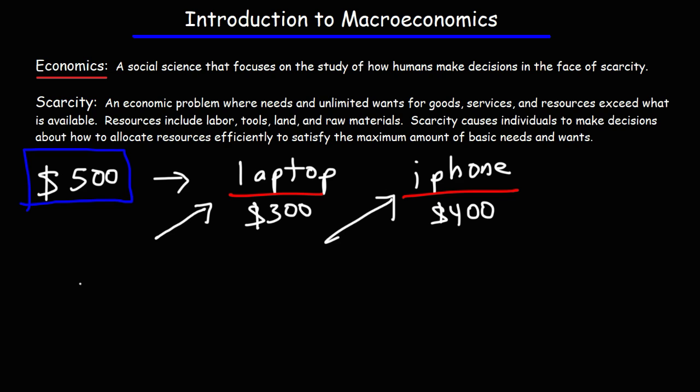Now, many economists won't consider money as a resource — some may say it's a financial resource — but nevertheless, with limited capital you need to make a decision in terms of how you want to use it to buy the things that you want or need. And so that's an example of economics: how you make decisions in the face of scarcity, when the things you have are limited.